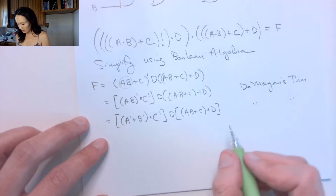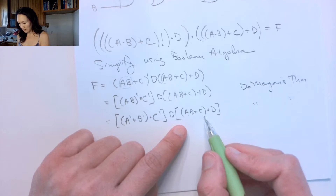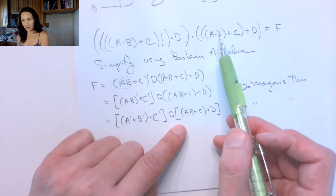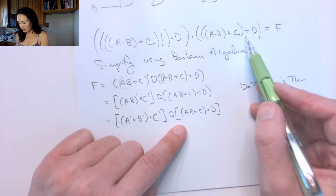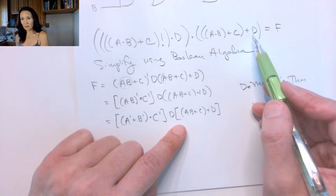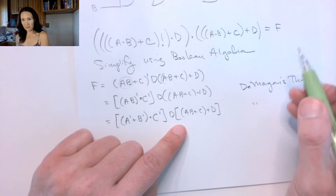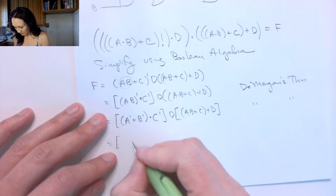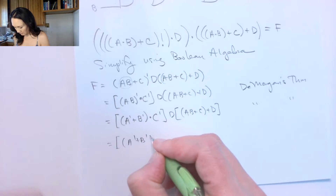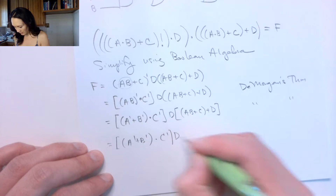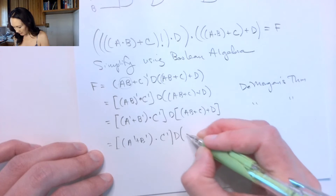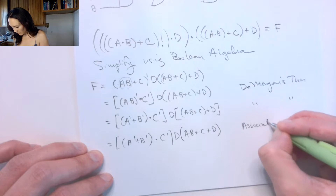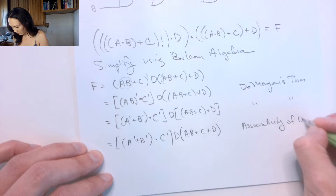Now we have some parentheses that were created because an AND result was later OR'd with C, and since that gets OR'd with D, we have associativity of OR — we actually don't need all of these parentheses. So I can write this all as one expression: Ā OR B̄, ANDed with C̄, and that result ANDed with D, and D is ANDed with A, B, or C, or D. This is by associativity of the OR function.